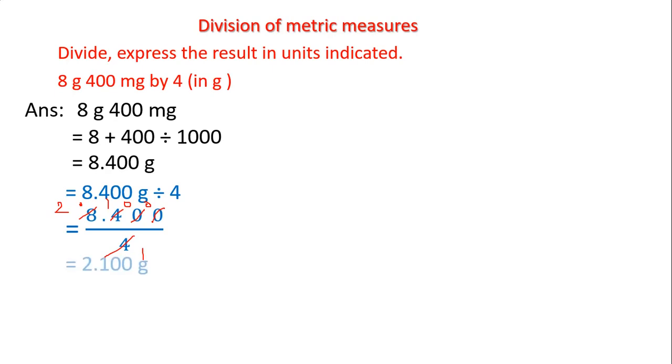Next, we got the quotient as 2.100 grams. As you can see, two zeros are in the rightmost position. When zeros come in the rightmost position of our decimal part, they don't have value, so we will remove them and we will get the final answer as 2.1 grams. Hence, after dividing we get the answer as 2.1 grams. This way we will divide any given metric measures.